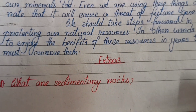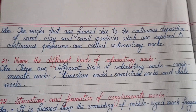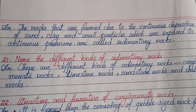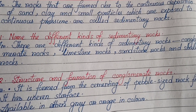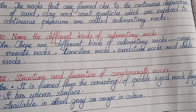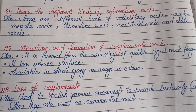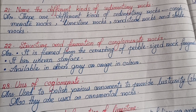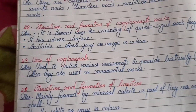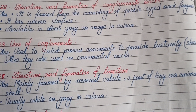What are sedimentary rocks? The rocks that are formed due to the continuous deposition of sand, clay and small particles which are exposed to continuous pressure are called sedimentary rocks. Name the different kinds of sedimentary rocks: conglomerate rocks, limestone rocks, sandstone rocks, and shale rocks. Structure and formation of conglomerate rocks: it is formed from the cementing of pebble-sized rock fragments; it has an uneven surface and is available in either gray or orange in color.